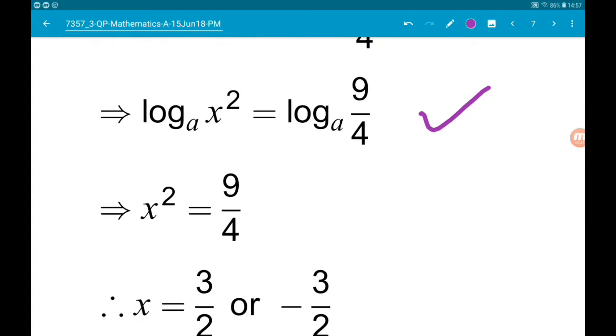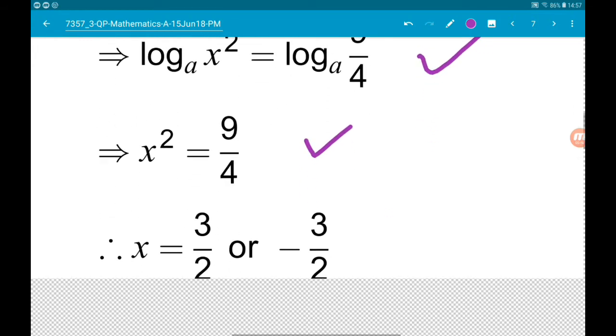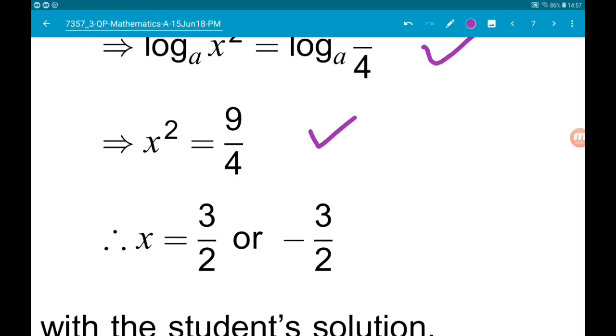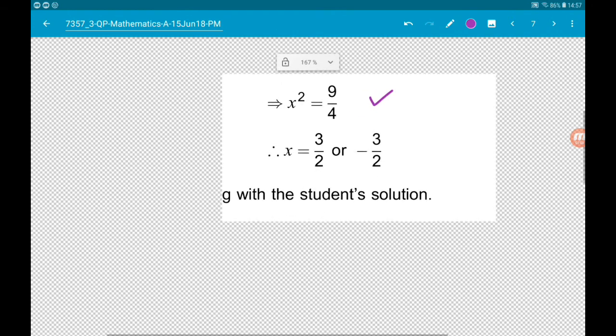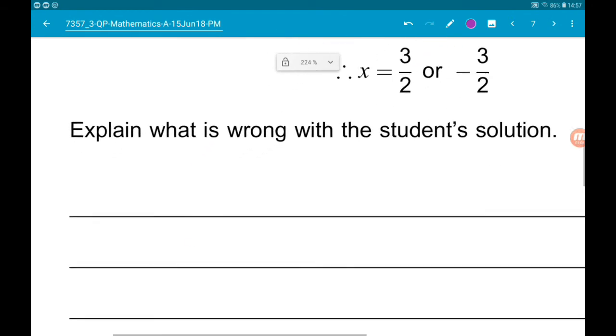We've then got rid of the logs, that's fine. So x squared is nine quarters. Now when we've square rooted we do get x is three halves and negative three halves, but the problem is negative numbers...